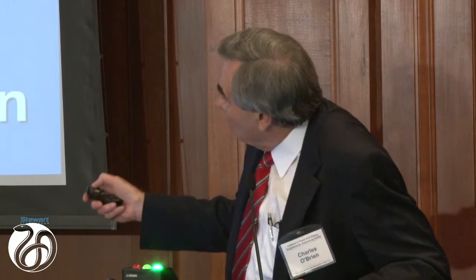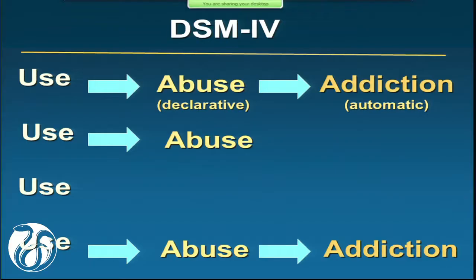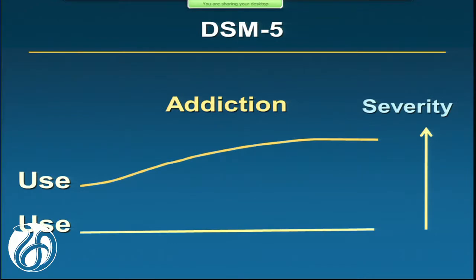On DSM-4, we thought there was abuse and addiction — sort of in a severity progression. You went from use to abuse to addiction. But we now know that's not true. We examined 150,000 diagnostic interviews and it's more of a progressive phenomenon, going gradually from use to addiction.